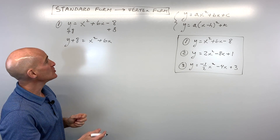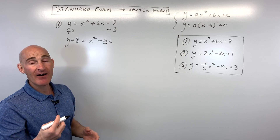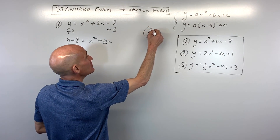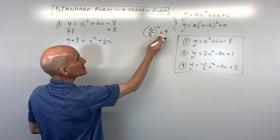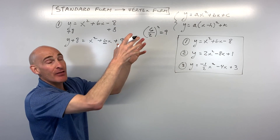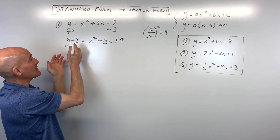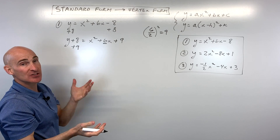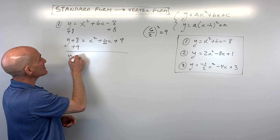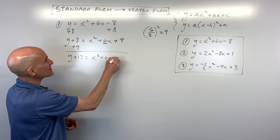The next thing we want to do is look at the number in front of x. We want to take half that number and square it. So take 6 divided by 2 and square it — that's 9. If I add 9 on the right side, I have to add 9 to the other side of the equation to keep it balanced. So this comes out to y plus 17 equals x squared plus 6x plus 9.